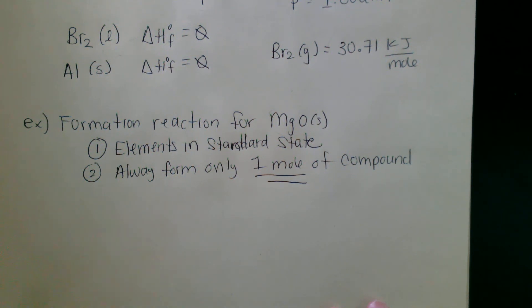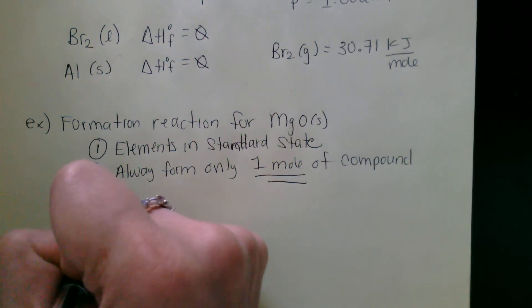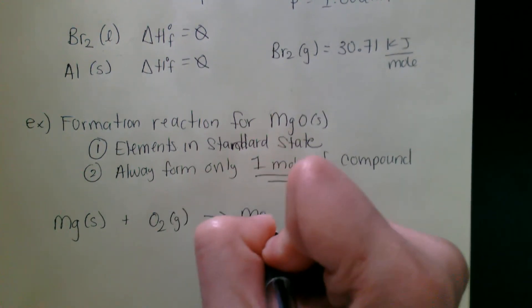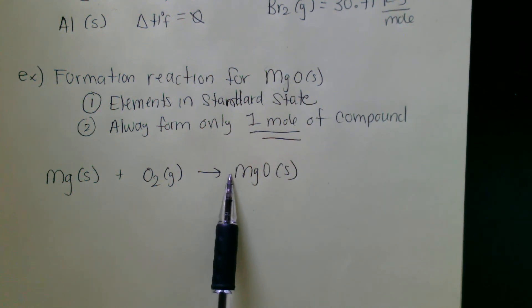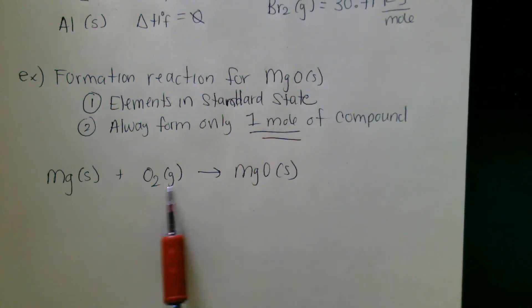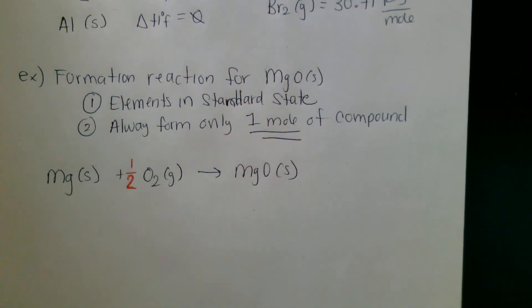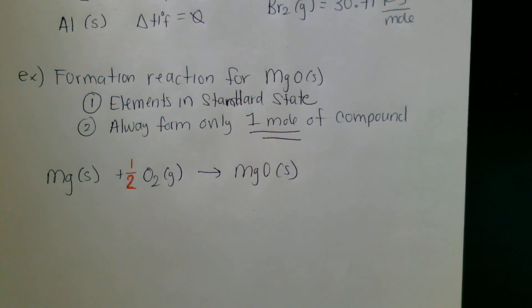For the formation reaction of magnesium oxide: magnesium exists as Mg solid, oxygen exists as O2 gas, and our product is MgO solid. Just like any reaction, it has to be balanced, but the coefficient for the product always has to be one. We only need one oxygen, so we only need half of the O2. So for the formation reaction we put in one half — fractions are perfectly acceptable in formation reactions.